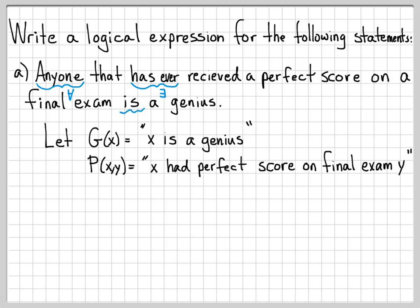And then the other word here is is. Our English sentence says anyone that has ever received a perfect score on a final exam is a genius. So this is kind of our implies or our conditional connective that we're going to use to represent that part of the English sentence. So that gives us a little clue to some of the other symbols we're going to need.